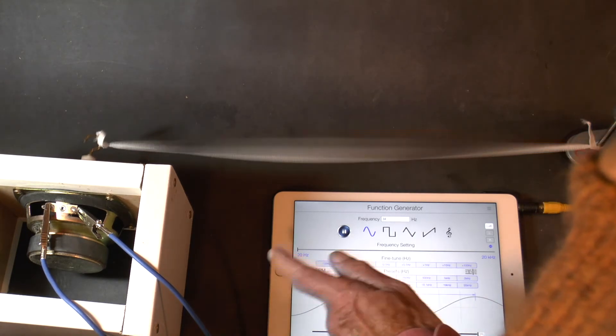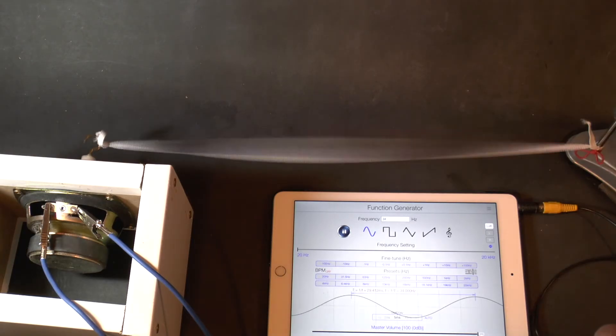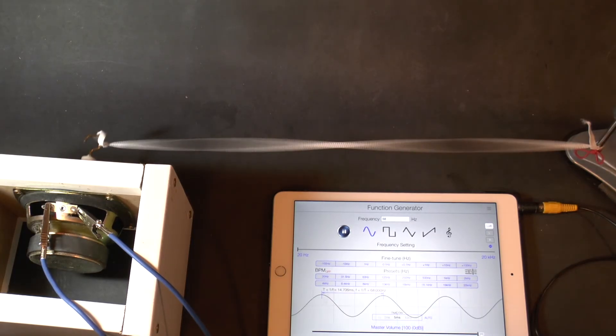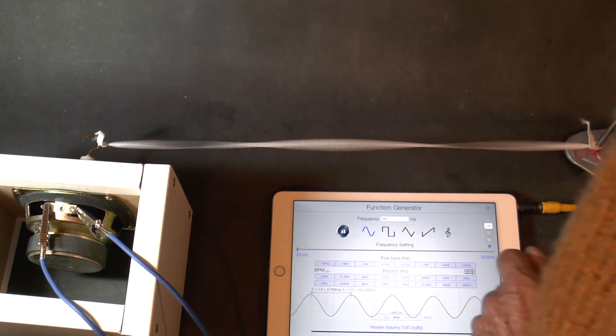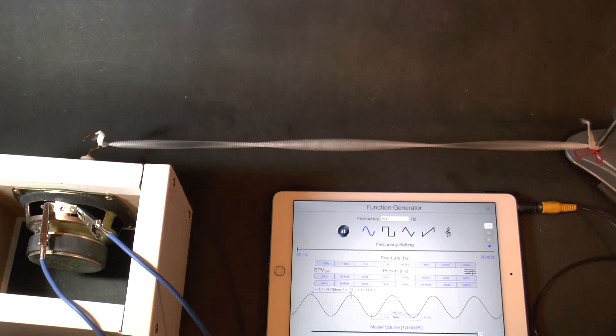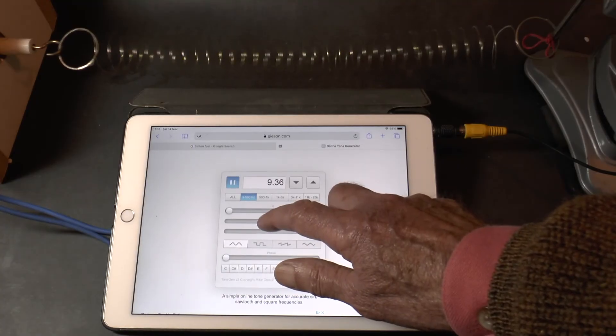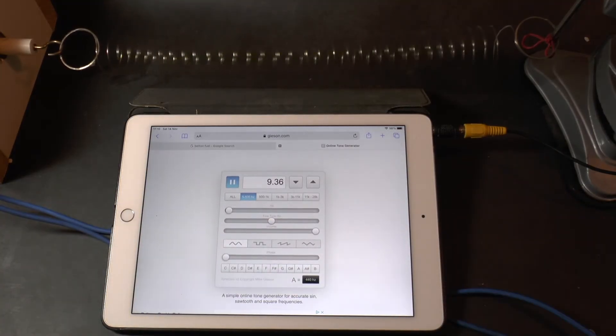The generator can be used to demonstrate resonance in strings so it will show the fundamental first harmonic, second harmonic and so on. Turning it on its side you can demonstrate vibration and resonance with longitudinal waves.